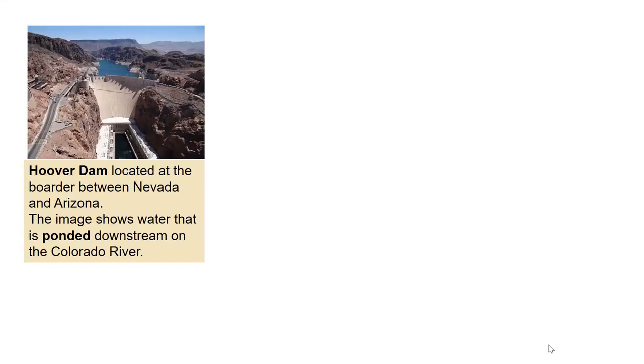The following provides examples of hydraulic structures that will cause the water surface profiles we will discuss in this video to occur. The Hoover Dam provides an example of what we call backwater profiling. Backwatering occurs when flows are ponded on the downstream side. The Hoover Dam is located at the border of Nevada and Arizona on the Colorado River.